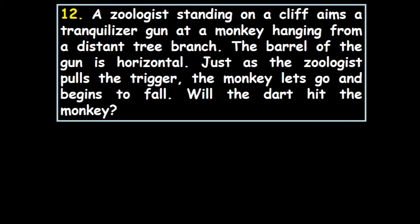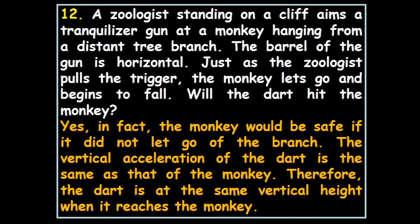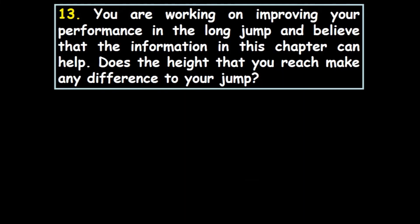A zoologist standing on a cliff aims a tranquilizer gun at a monkey hanging from a distant tree branch. The barrel of the gun is horizontal. Just as the zookeeper pulls the trigger, the monkey lets go and begins to fall. Will the dart hit the monkey? Yes. In fact, the monkey would be safe if he did not let go of the branch. The vertical acceleration of the dart is the same as that of the monkey. Therefore, the dart is at the same vertical height when it reaches the monkey. You have to take into account the vertical drop if you're trying to hit an object and you're aiming horizontally.